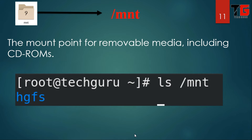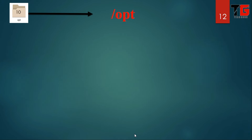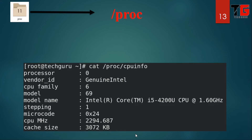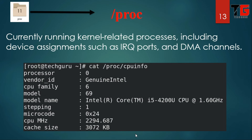Next is slash mnt. You can also use the slash mnt directory to mount a CD-ROM or removable media, same as the slash media directory. Next is slash opt. This is the optional directory. When you are installing some applications like WordPerfect, StarOffice, or any other application, they will use this directory.